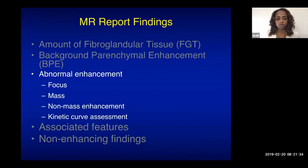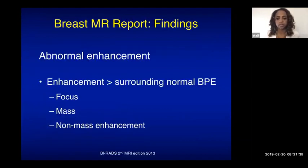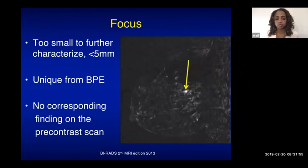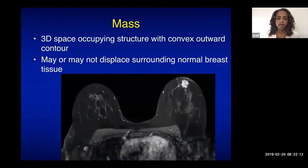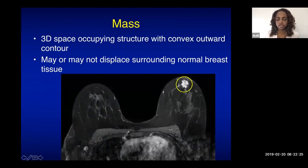Abnormal enhancement is described as enhancement greater than the surrounding normal BPE, and includes a focus, a mass, or non-mass enhancement. A focus is abnormal enhancement too small to characterize further — usually less than 5 mm — with no corresponding finding on pre-contrast sequences. A mass is a 3D space-occupying structure with convex outward contour that may displace surrounding breast tissue.